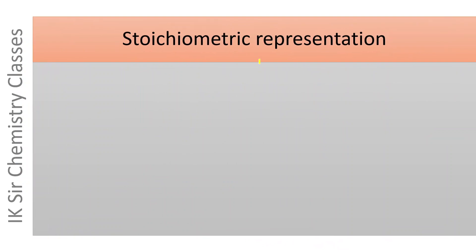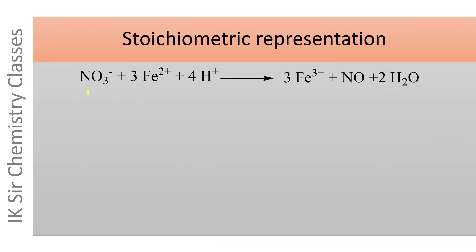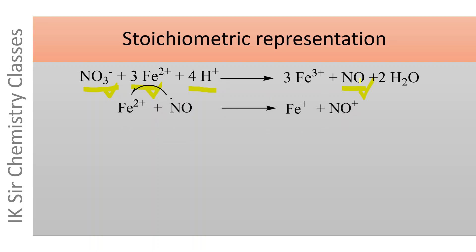Stoichiometric representation. Nitrate ion is reduced by ferrous ion in the acidic medium to nitric oxide. Ferrous ion reduces nitrate ion to nitric oxide (NO) in the acidic medium. The NO molecule has one unpaired electron, which is transferred to Fe2+ ion; as a result Fe2+ is oxidized to Fe+ and the NO molecule is oxidized to NO+.